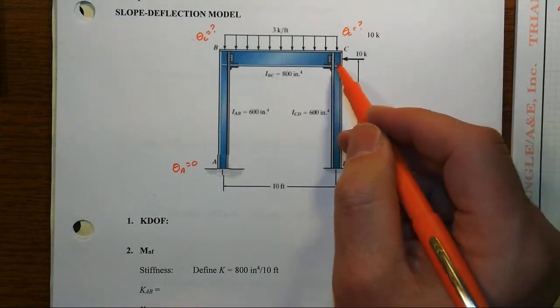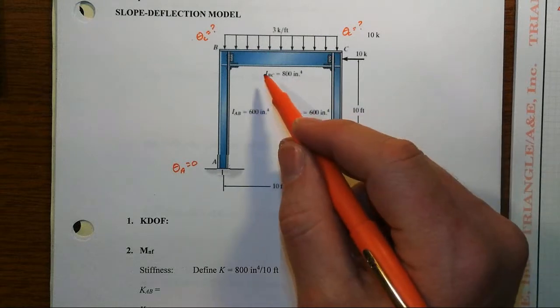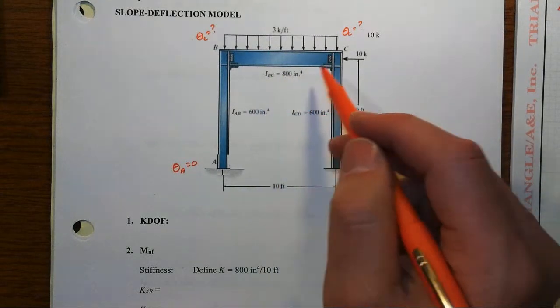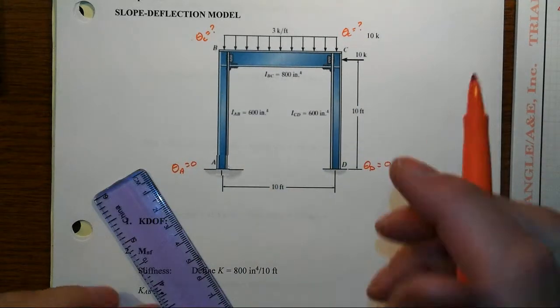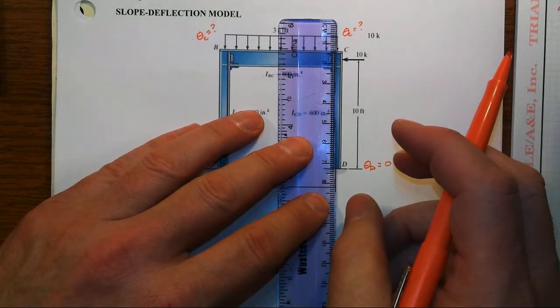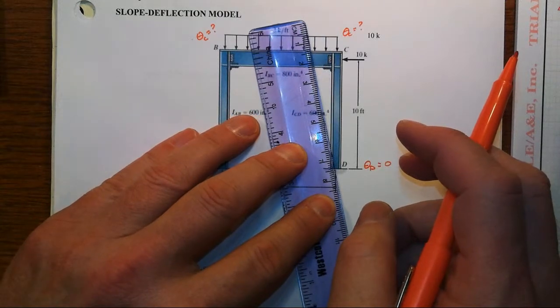And then we have the lateral load, that's going to cause probably some sway, in this case likely to the left, to go along with the direction of the lateral load. So that's going to mean that if that happens, then the column will have experienced a chord rotation.